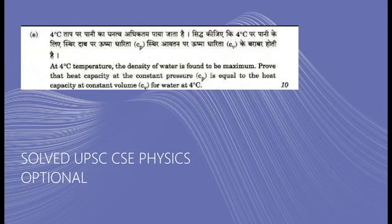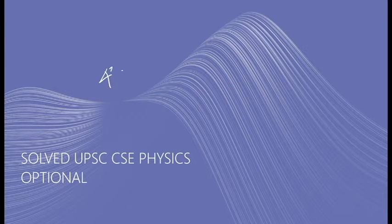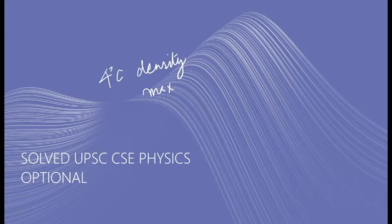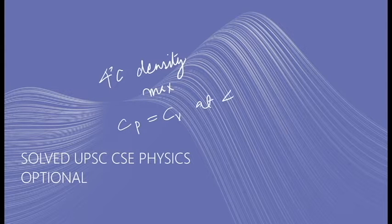Hello everyone. In today's video we will be taking a previous year question for physics optional UPSC CSE exam. The question is: at 4 degrees Celsius the density of water is found to be maximum. We have to prove that the heat capacity at constant pressure is equal to the heat capacity at constant volume at 4 degrees Celsius temperature.